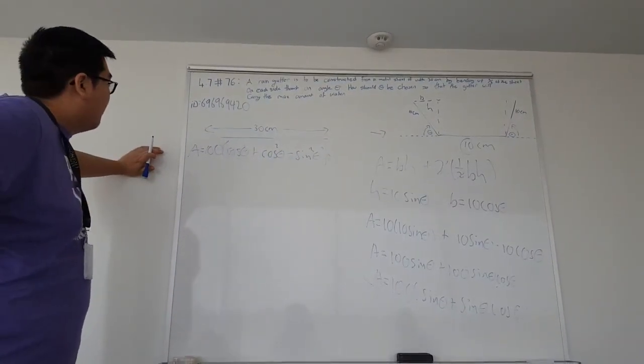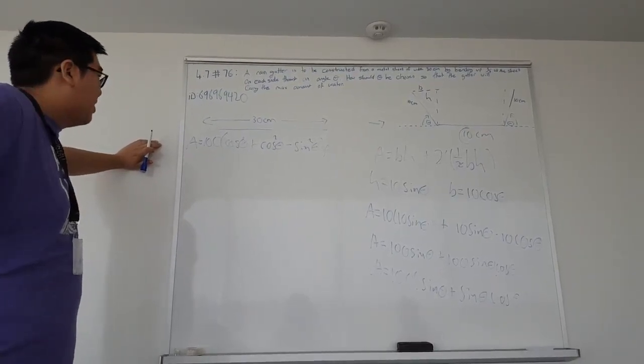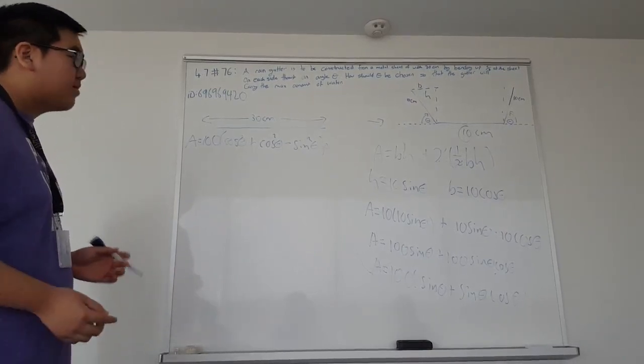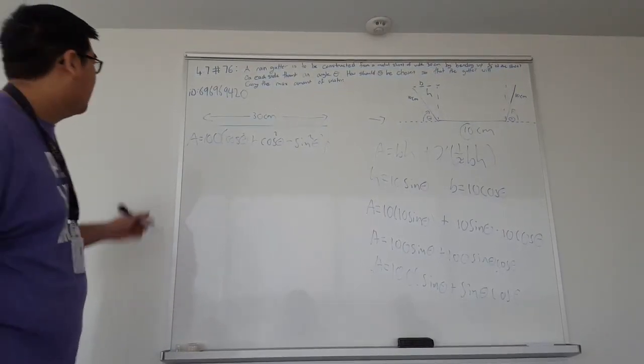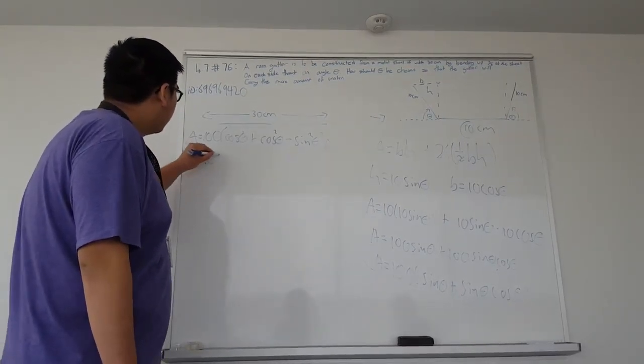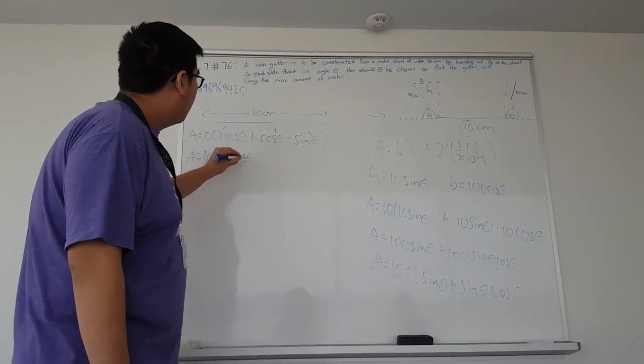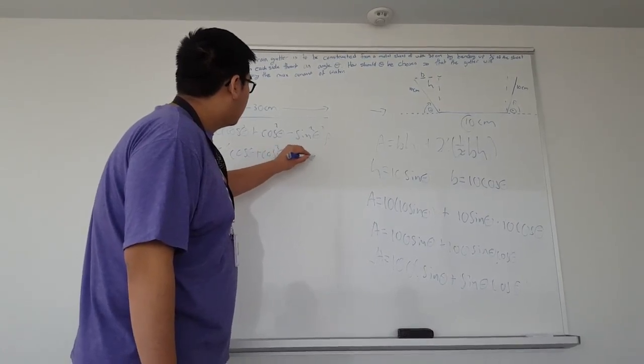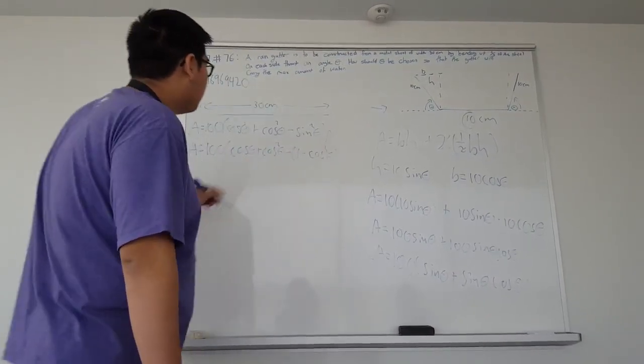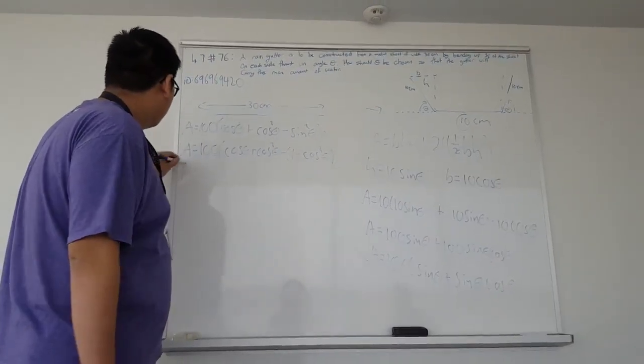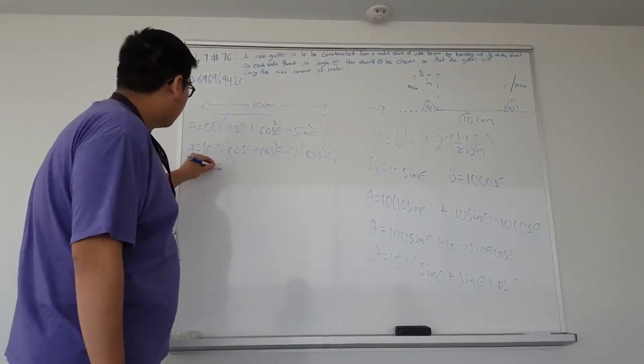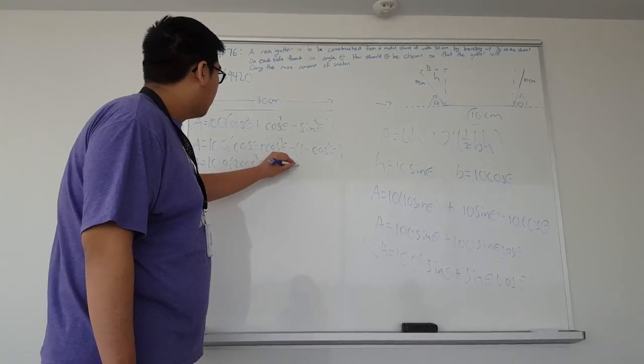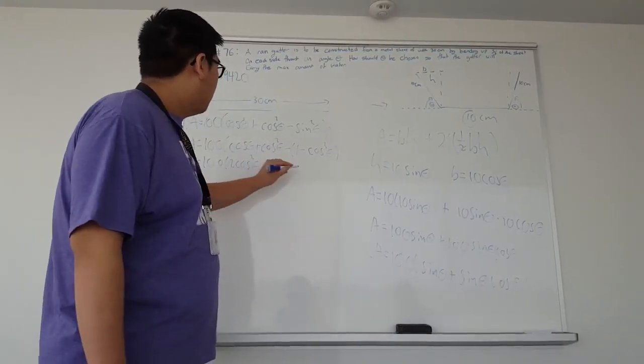And now we have our variable in terms of sine and cos, and we either want to convert it to all sines or all coses. And in this case, it's easier to convert sine squared theta into 1 minus cos squared theta. So then our area would be 100 times cos theta plus cos squared theta minus 1 minus cos squared theta. And we would get 2 cos squared theta plus cos theta minus 1.